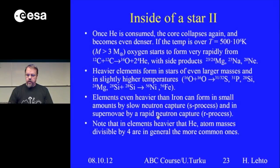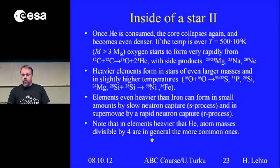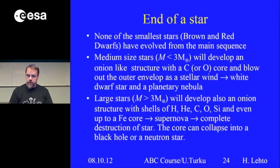Elements heavier than iron can form in small amounts by slow neutron capture in ordinary stars, and in supernovae heavier elements are formed by rapid neutron capture — two different processes. Note that in elements heavier than helium, atom masses divisible by four are generally the more common ones — you can see this cycle of four in a table of atom masses.